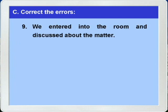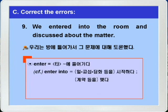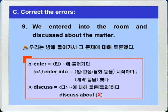9번, We entered into the room and discussed about the problem. 우리는 방에 들어가서 그 문제에 대해 토론했다는 말이죠. enter는 타동사로 뭐뭐에 들어가다라는 뜻일 때 절대로 전치사 into를 쓰지 않습니다. 또한 discuss도 타동사로 그 뜻 자체에 about을 포함하고 있기 때문에 discuss about으로 쓰지 않습니다. 따라서 entered into에서 into를 빼고, discussed about에서 about을 빼면 되겠습니다.